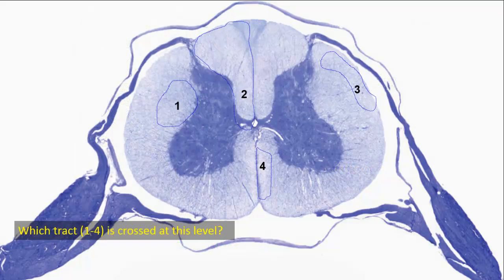Which of the tracts 1 to 4 is crossed at this level? First, let's identify the tracts. One is located in the dorsal half of the lateral funiculus — it is the lateral corticospinal tract. The tract consists of 75 to 90% of pyramidal tract fibers that cross at the pyramidal decussation in the medulla. So at this location, it is a crossed tract.